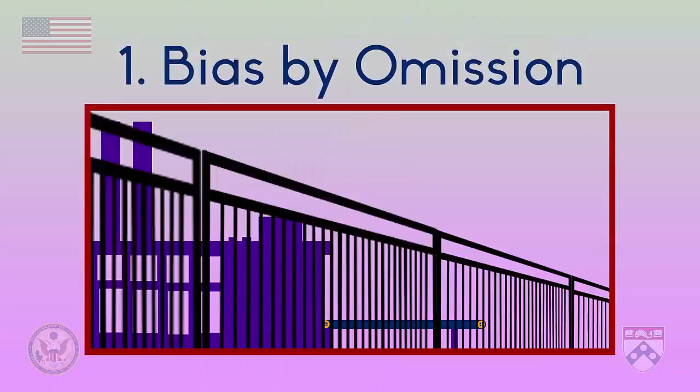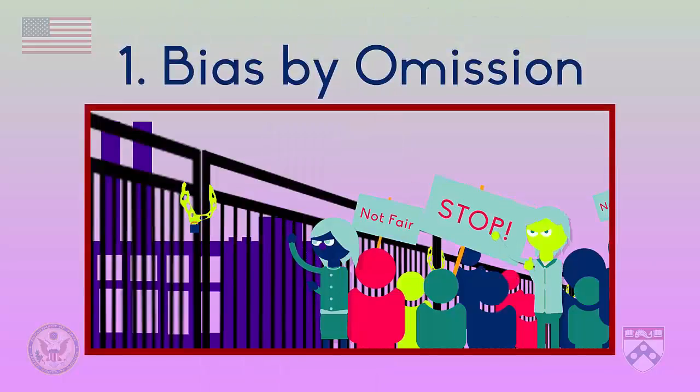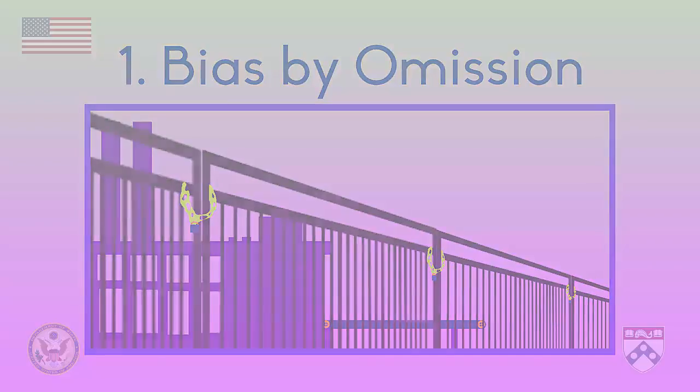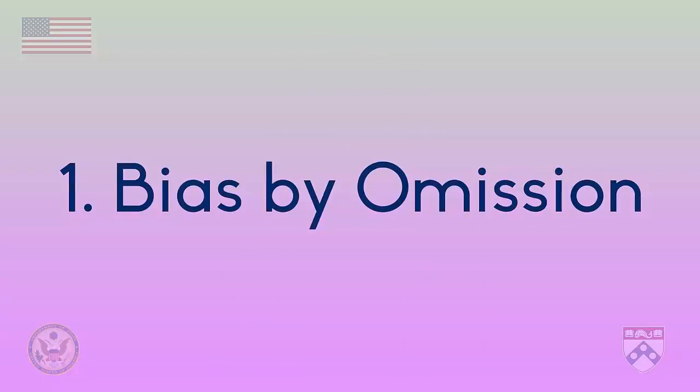The first type we'll introduce is bias by omission. Let's say that on Ronnie's website there is a big story about how angry people are that a local factory is about to close. Adathy's website also has a story about the closing factory but it doesn't mention that anyone is angry. This information has been omitted or left out of Adathy's news website. If that information is important then we are seeing bias by omission.